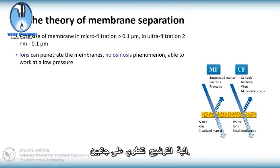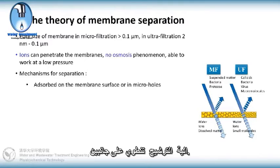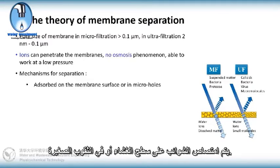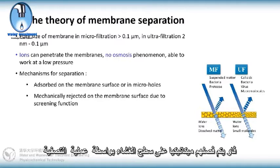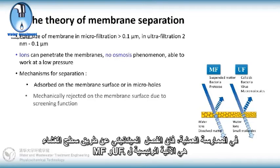The separation mechanisms involve two aspects. Impurities are adsorbed on the membrane surface or in micropores, or they are mechanically rejected on the membrane surface due to the screening function. In practice, mechanical screening by the membrane surface is the major mechanism for MF and UF.